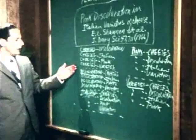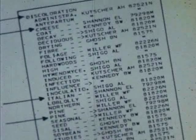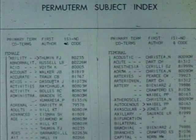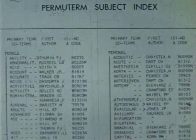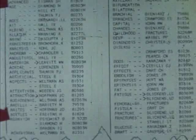The Permuterm Index is an alphabetically arranged word index and is quite easy to use. Suppose one is interested in literature on the effect of age on female behavior. You can begin the search under age, female, or behavior. The primary entry, female, is followed by the co-term entries for age and behavior, which also appear in alphabetical order as subheadings.